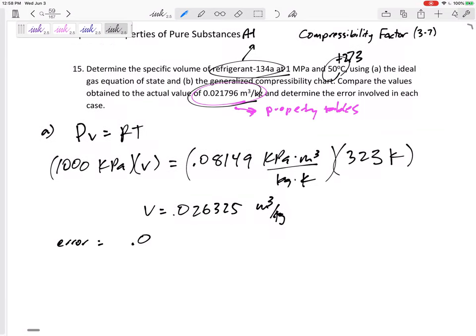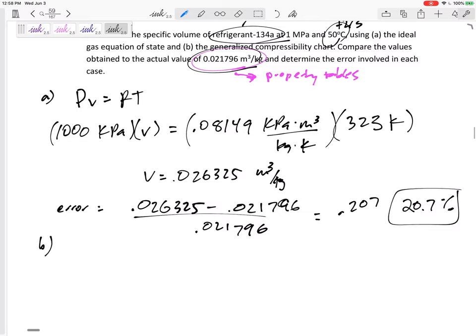So the error would be 0.026325 minus the actual 0.021796 over the actual. Always divide it by the actual if we kind of want to get the percent error. We don't want just the change, the difference. We divide it by the actual, 0.207. That's 20.7%. That's a pretty big error. But I was assuming it's an ideal gas. Maybe it's not quite an ideal gas, or maybe I can use the compressibility factor to correct that a little bit better.